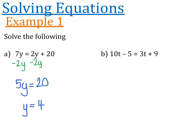The next example is the same idea but we've got two lots of numbers as well. I'm going to start the same way — but let's read the question first. 10t minus 5 is equal to 3t plus 9.